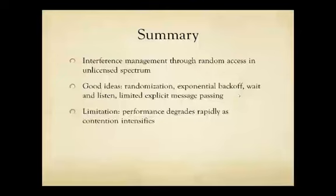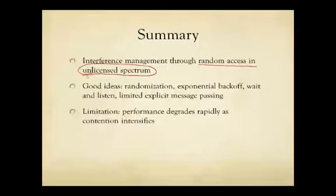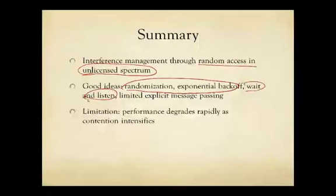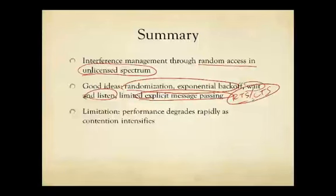In summary, in Wi-Fi, interference management is done through random access rather than power control as in cellular. A big part of the reason is it's operating in unlicensed spectrum. There are a few very good ideas including randomized exponential backup, differentiated wait and listen intervals, and limited explicit message passing. The RTS-CTS is not always enabled, which may explain some of the inefficiency of throughput in hotspots. But it's got a big limitation.